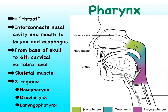The pharynx is made up of skeletal muscle and we can differentiate three regions, which we have colored differently on the diagram. Let's take a closer look at each one of these regions because they tend to have slightly different functions.